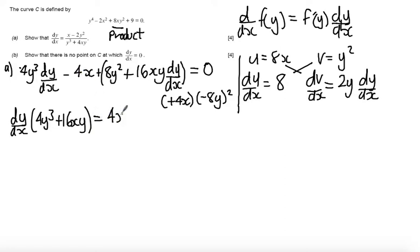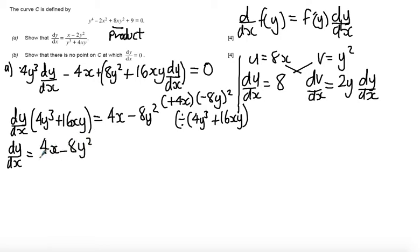Equal to, we've added 4x to both sides, I've subtracted 8y squared from both sides. Now, I want to divide both sides by this bracket here, so divide by 4y cubed plus 16xy, so we get dy by dx is equal to 4x minus 8y squared over 4y cubed plus 16xy.